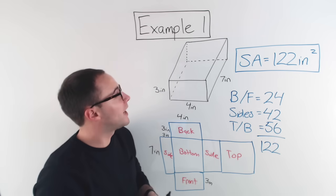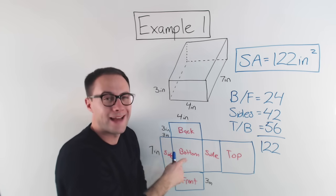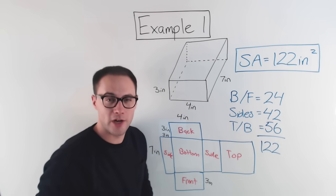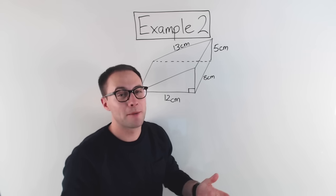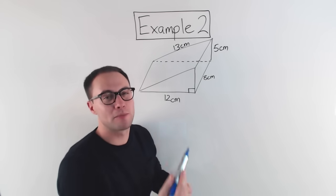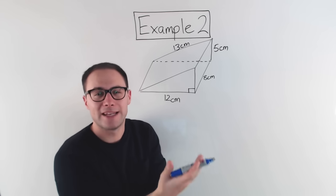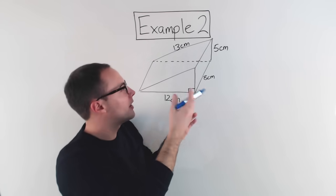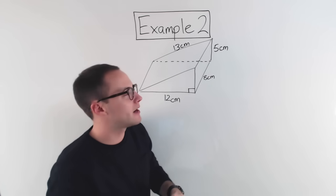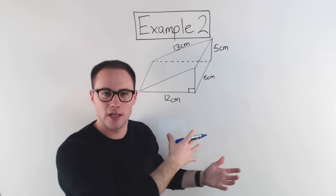That's how you find the surface area of a rectangular prism using a net. Here's something to try on your own. Example 2: let's find the surface area of this triangular prism, using a net again. When making nets, there's not just one way — it depends on how you fold it out. If your net looks a little different than mine, that's okay as long as you get the same result.